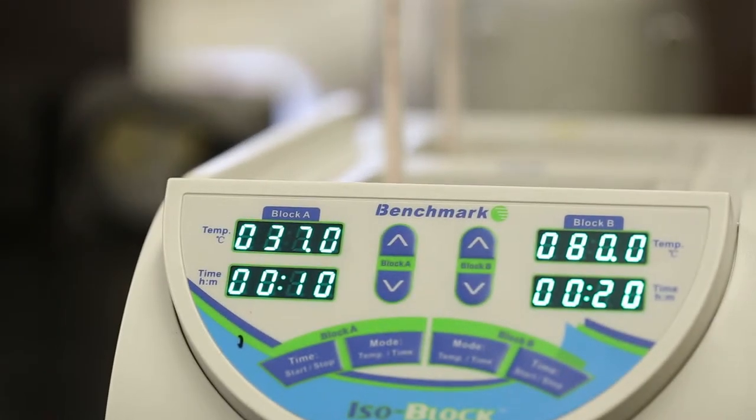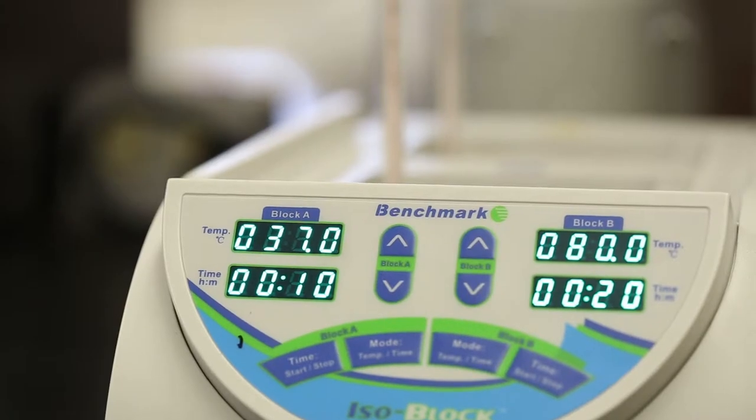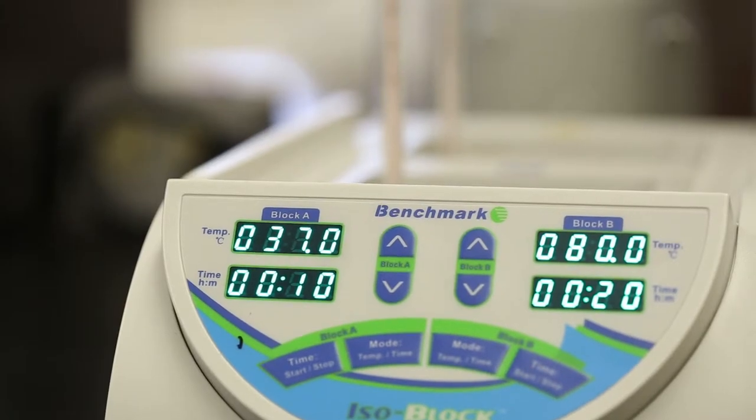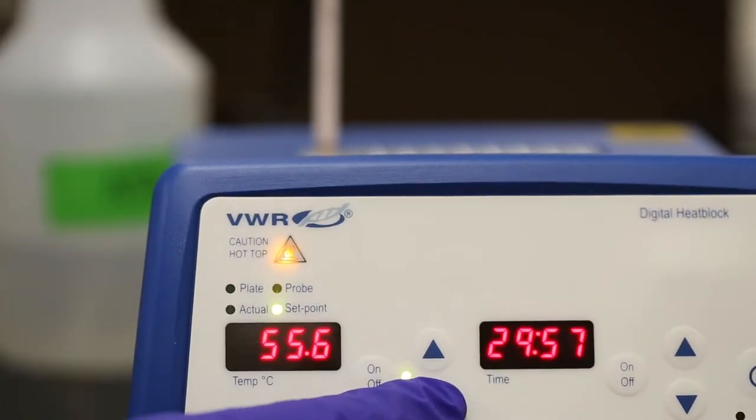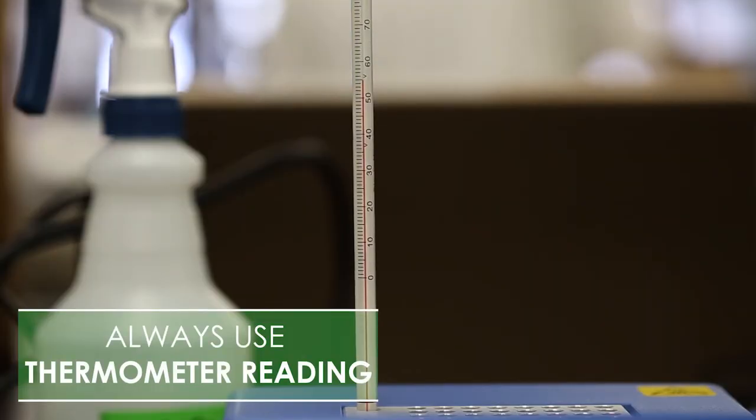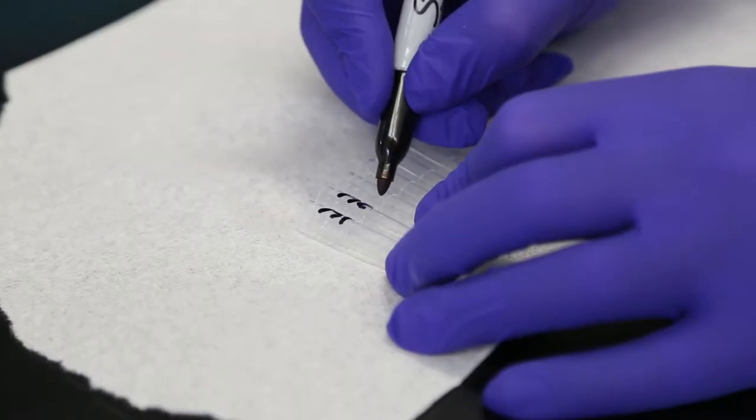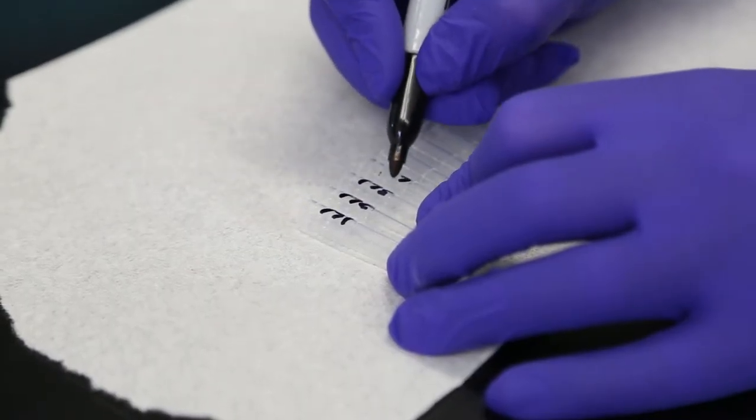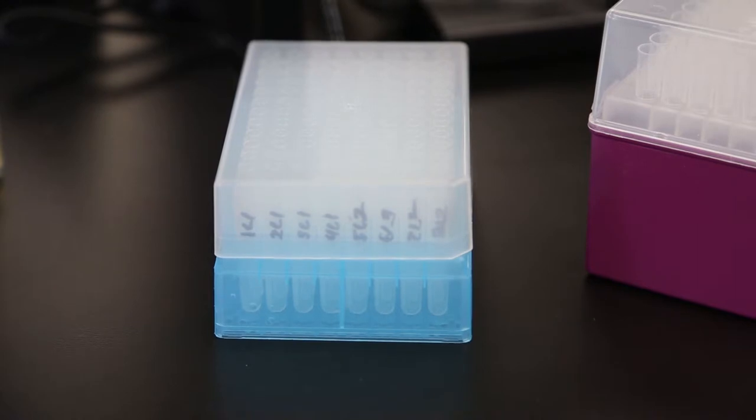Check the three heaters. They should read 37 degrees, 80 degrees, and 56 degrees Celsius respectively. If they do not, they may still be heating. If they appear to be done heating, indicated by a beep from the unit, check the thermometer in each block. If they do not read the appropriate temperature, adjust the heating block to within two degrees. Always go by the thermometer reading. Once the thermometer reaches the correct temperature, the heater will hold there even if the digital display varies. Take a strip of the 1.2 milliliter cluster tubes and mark them to correspond to your labeled samples.